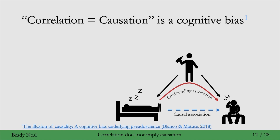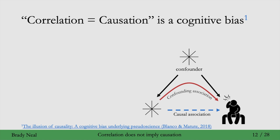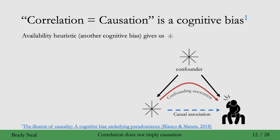In this example, where shoe sleeping is associated with a headache, you could actually just replace shoe sleeping with a star — just with anything associated with your headache. This star could come from a variety of different places. One is the availability heuristic, which is another cognitive bias. What the availability heuristic roughly says is: what will come into your mind, what star will come into your mind, is just whatever is most readily available in your mind.